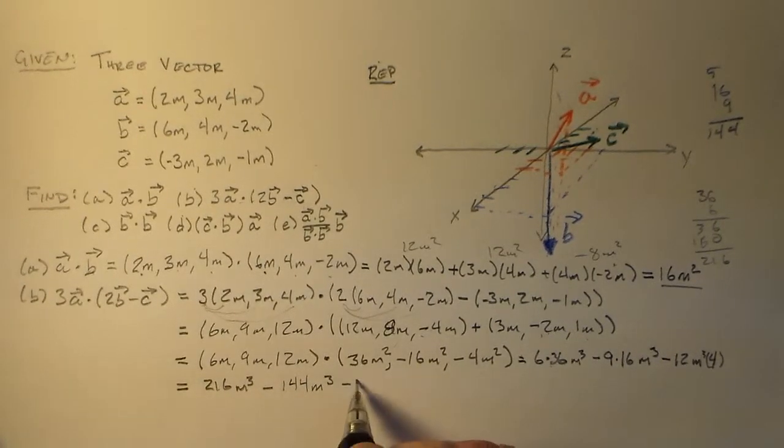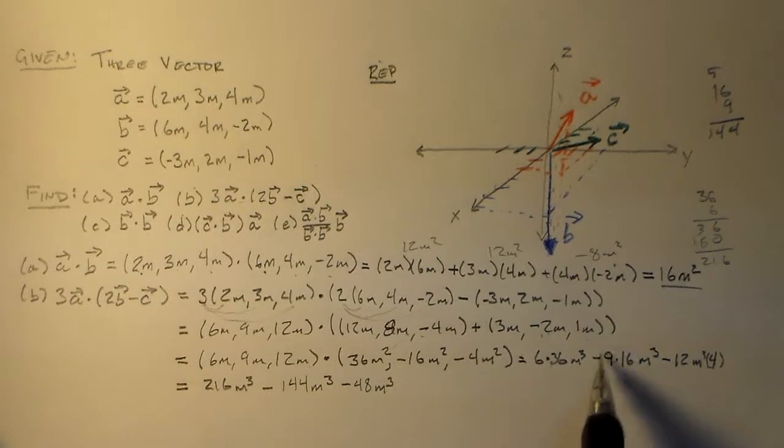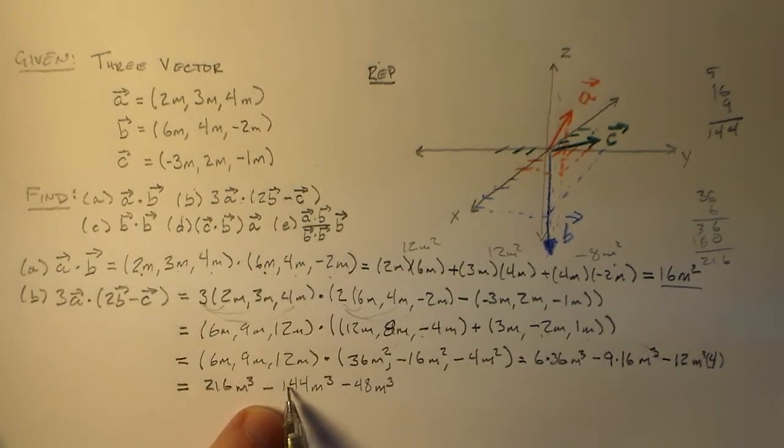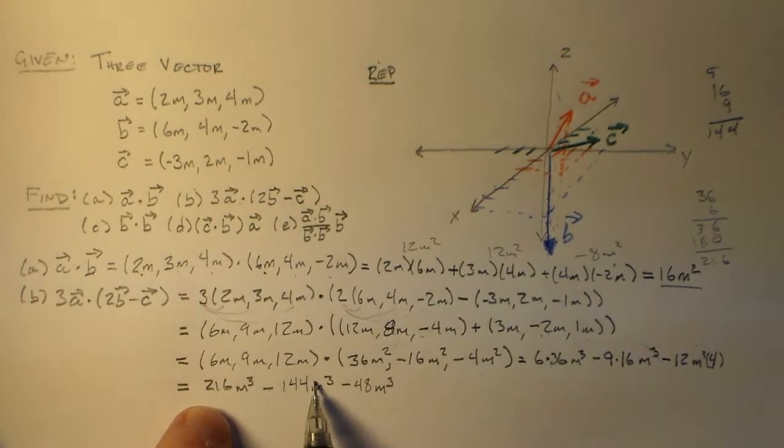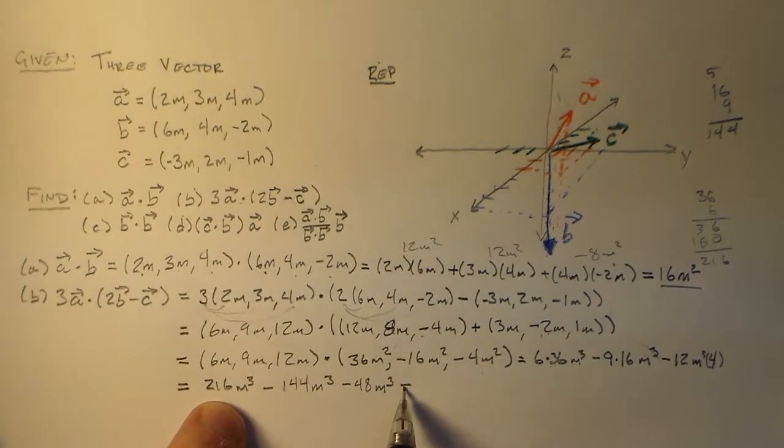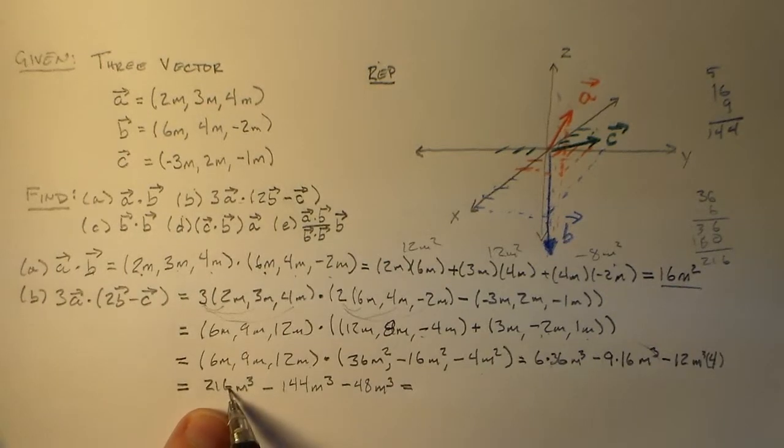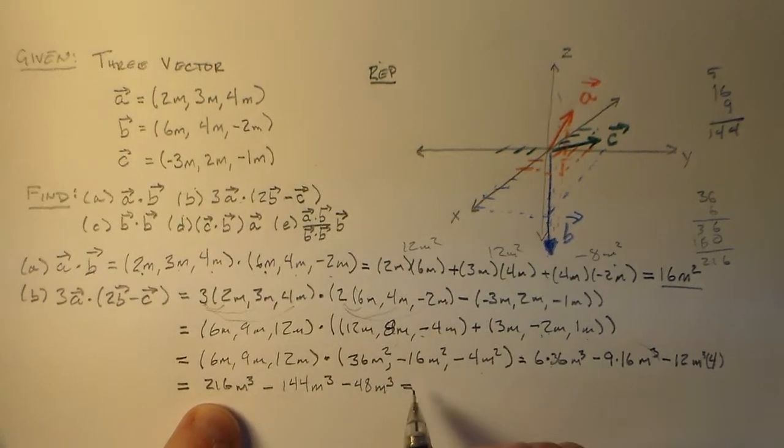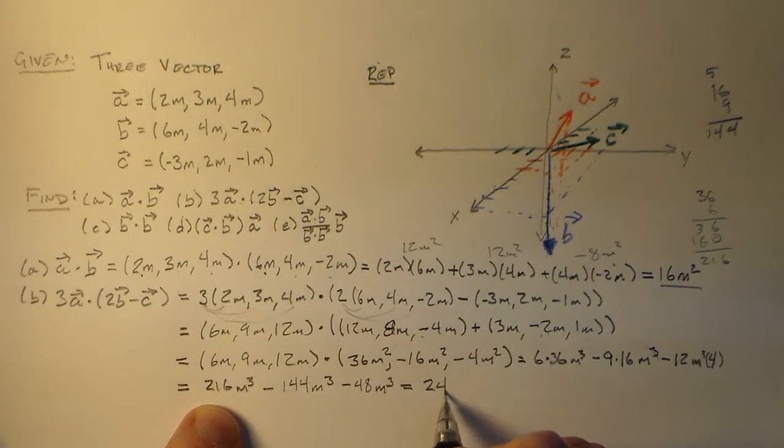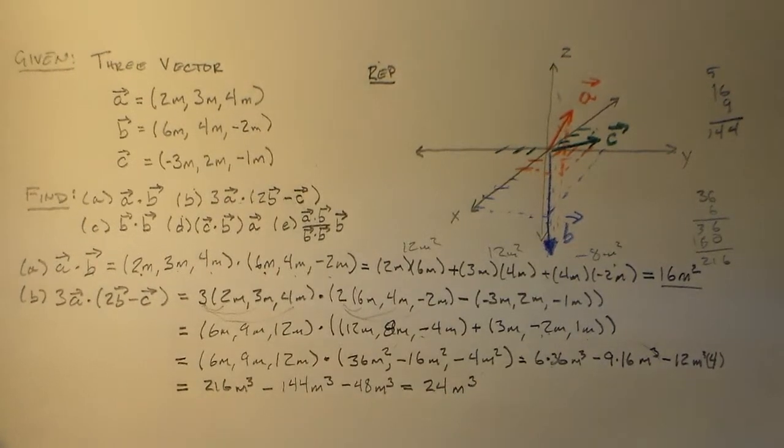So now what we have here, 144 plus 48 is 192, so we have 16 plus 8. So 16 plus 8 is 24 meters cubed. That's what we get from doing all of that work, is a nice little number, 24 meters cubed.